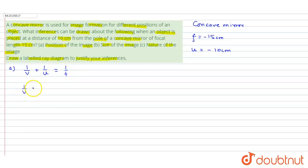On putting the value, u is given to be minus 10 and f is given to be minus 15. So 1 upon v becomes minus 1 by 15 plus 1 by 10.